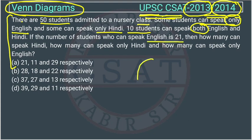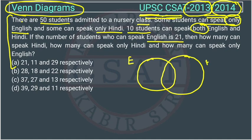Let's make a Venn diagram. This circle represents students who speak English and this circle represents students who speak Hindi. 10 students can speak both, so we put 10 in the overlapping area. The whole English circle is 21, and 10 are in the intersection, so the remaining part — only English — will be 21 minus 10, which is 11.